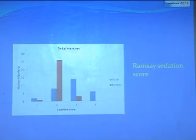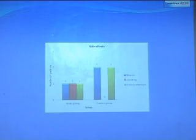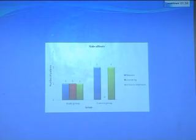The Ramsay sedation score showed that most patients in the study group had a score of 3 or 4, while the control group had a sedation score of 2. Side effects were not significant: only 3 patients in the study group experienced events — one each of nausea, vomiting, and urinary retention.